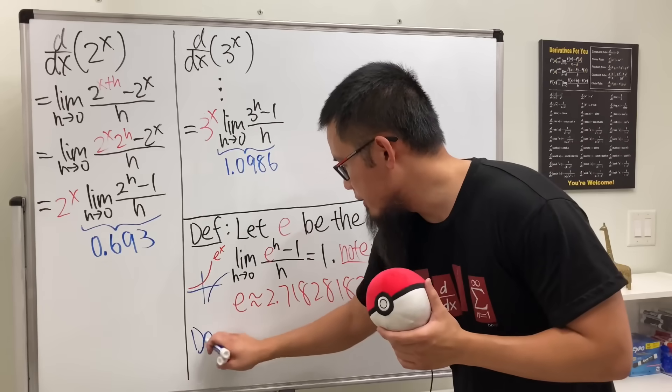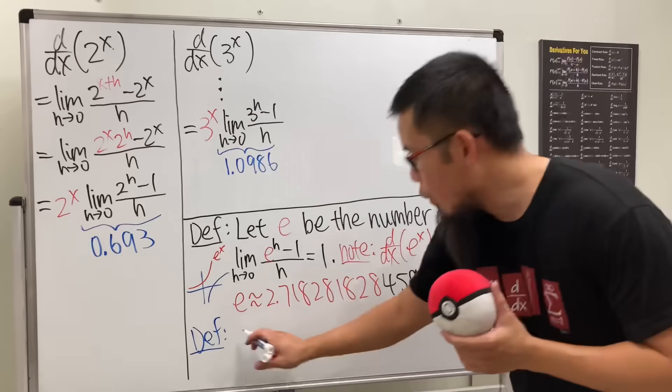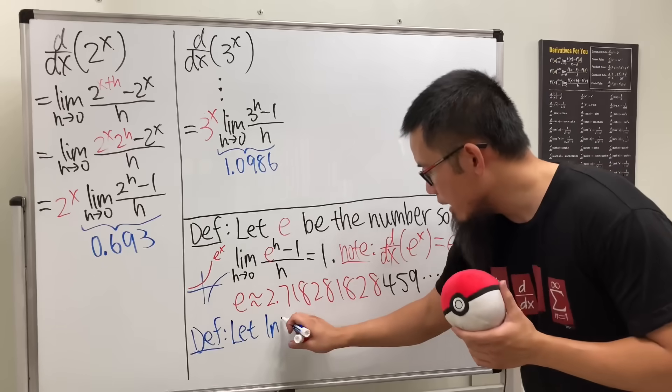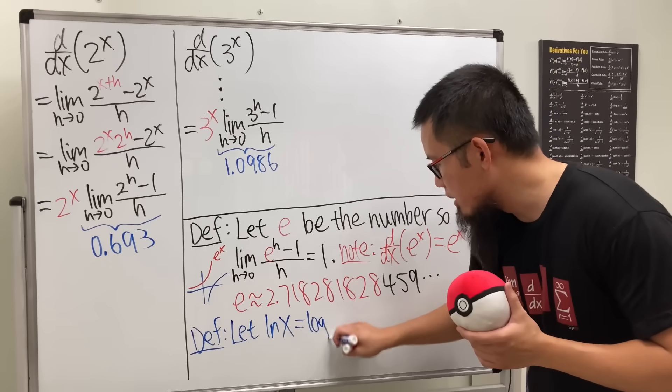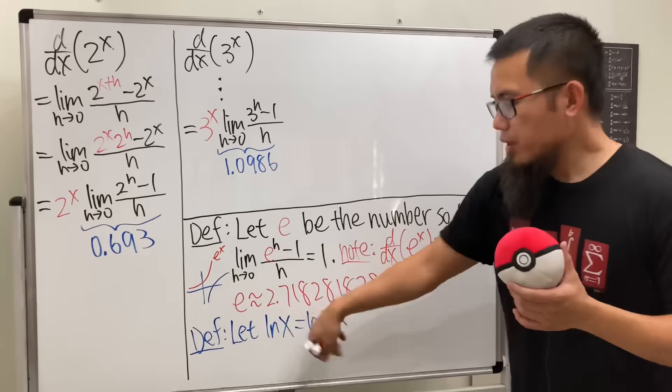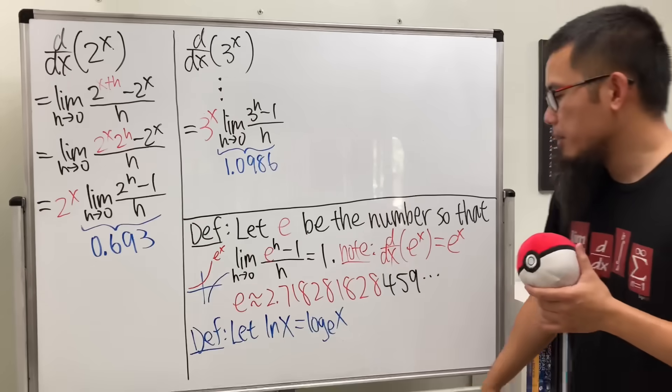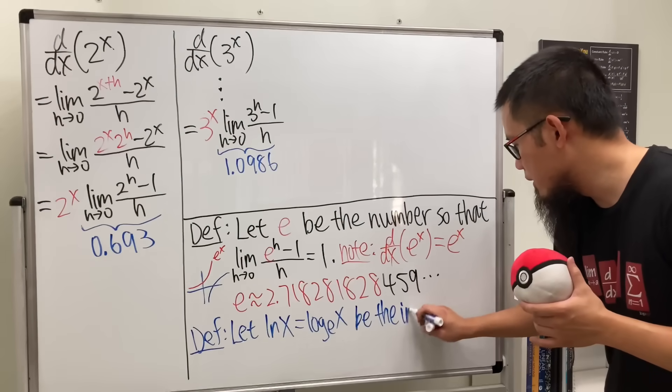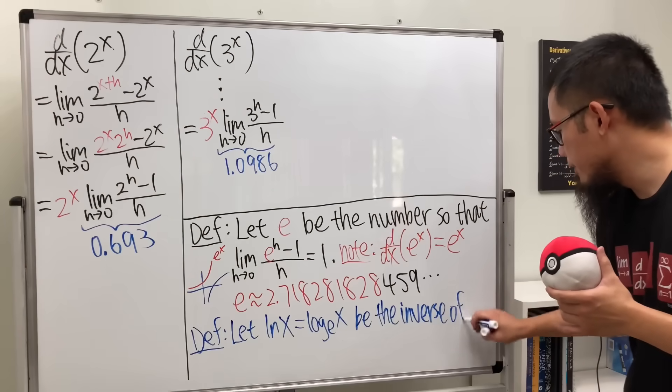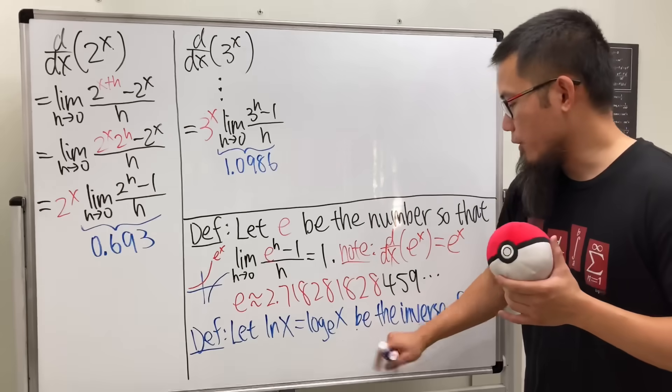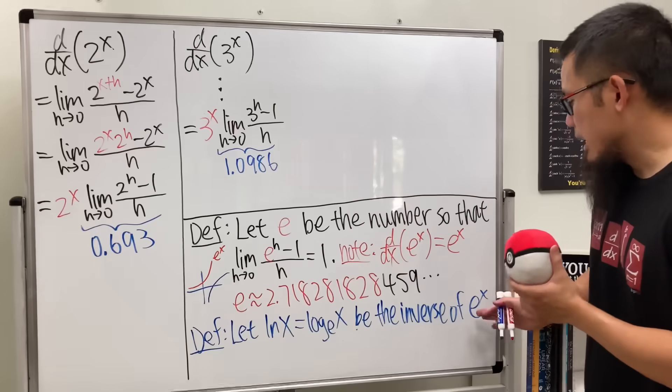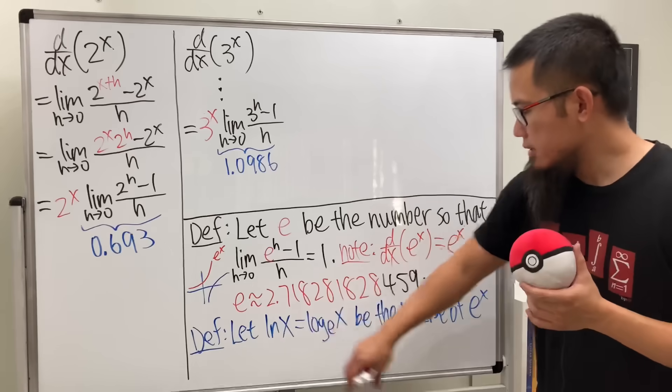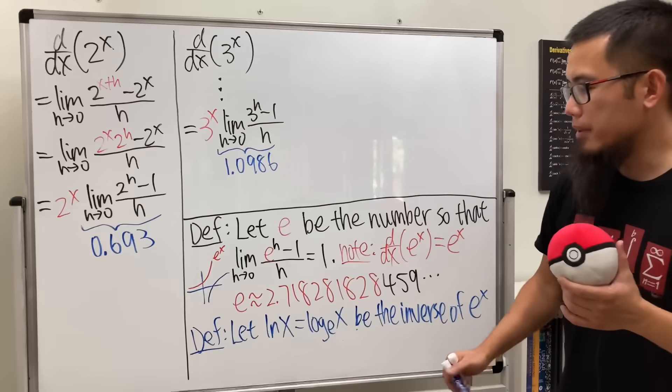So here is the definition. This is what we are going to do. Here is the symbol again, ln of x, and this is log base e of x. So for now, I can look at this as like a symbol, like a new function. But this will be the inverse of e to the x. So define the logarithm function as the inverse of e to the x. This is going to be wonderful because remember, if this is the inverse of that function, we can have two properties, right?